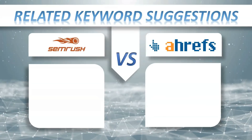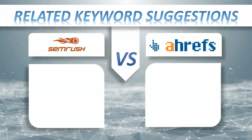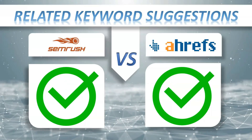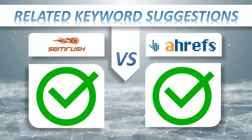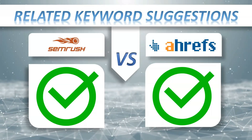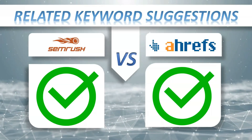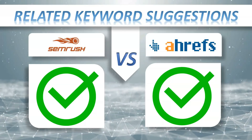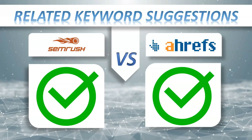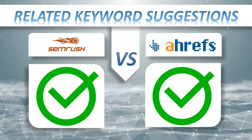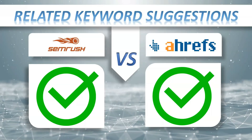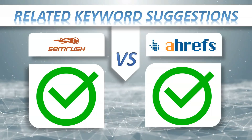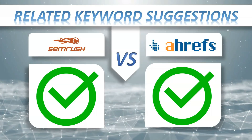Related keyword suggestions. SEMrush — yes. Ahrefs — yes. The easiest way to reach clients is to find out what your potential customers or readers are searching for on Google and create content on your website around these topics. Imagine how your business would benefit if you could analyze search trends, find search items related to your business domain, and customize content to serve the actual needs of your customers.